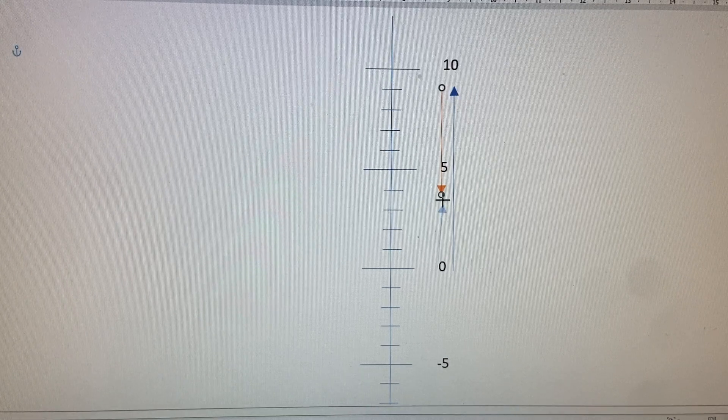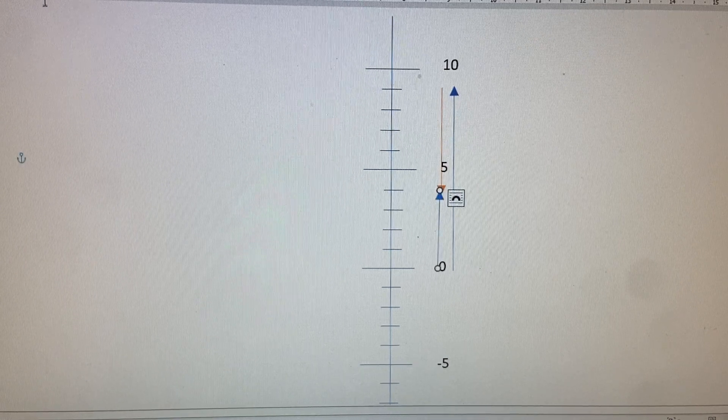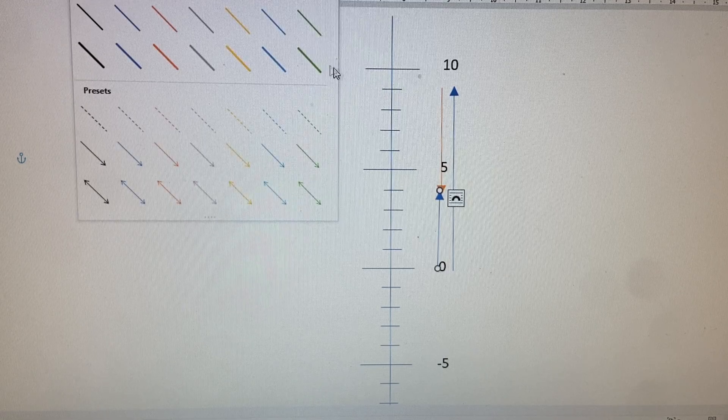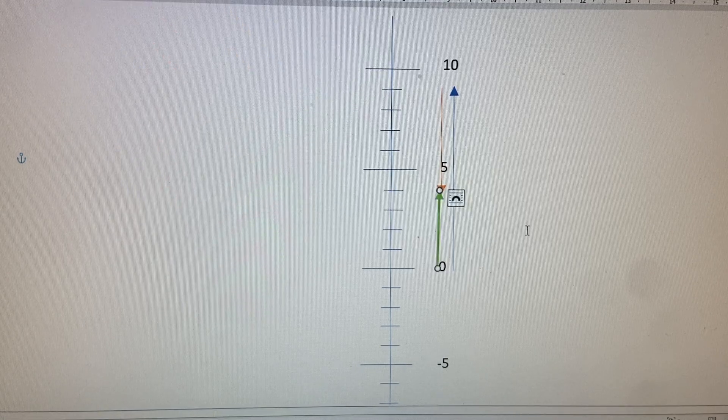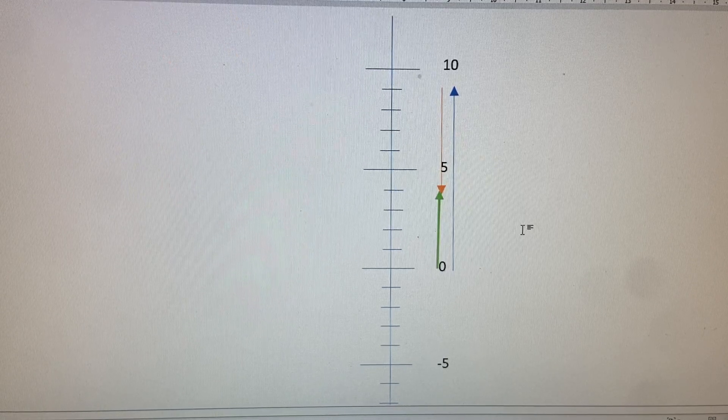That would be a subtraction. And with the resultant vector, we are ending up at there, just changing its color there for resultant vector. So it works vertically as well.